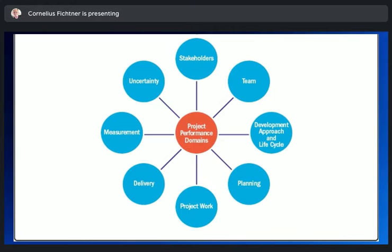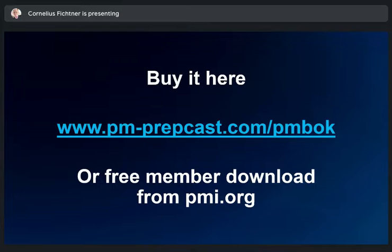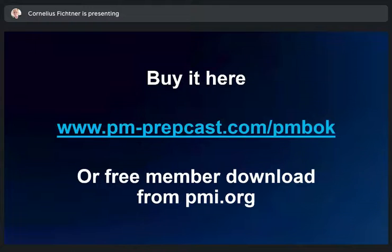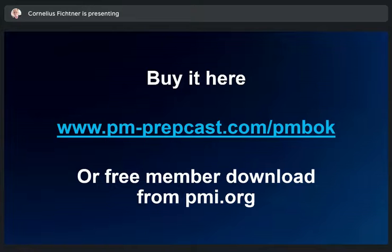You can get the PMBOK Guide by going to pmprepcost.com — a link to Amazon — or if you're a PMI member you can download the PDF from the PMI website, though you can't print it. The 7th edition is much smaller than the 6th edition — perhaps a third of the size of the 6th edition, which was humongously thick.